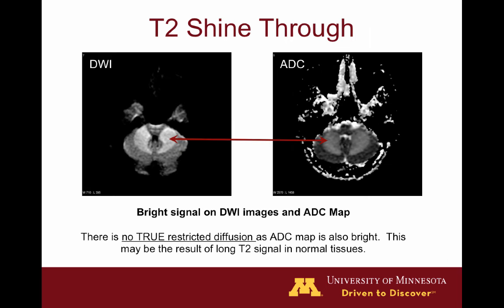Here we have an example of T2 shine-through. We've got DWI and ADC images of the posterior fossa, and you can see increased signal on the diffusion-weighted images and also increased signal on the ADC map, predominantly in the white matter of the cerebellum. So this is not really restricted diffusion — this is T2 shine-through.